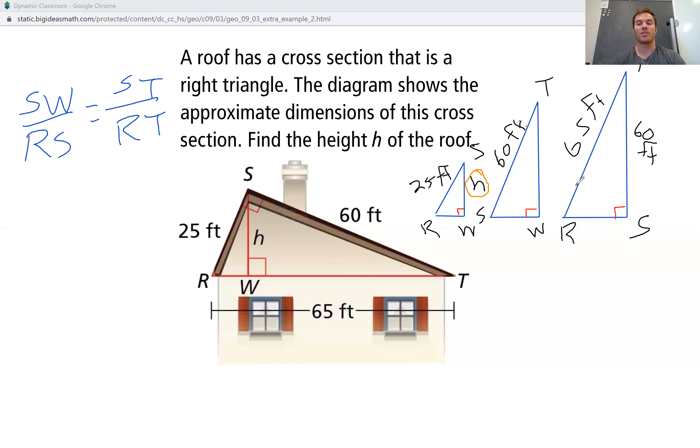Now I have to plug and check. So I'm going to substitute. We're using the substitute property. I'm going to substitute. SW is H. RS is 25. Set it equal to ST, which is 60. And RT is 65. We have our ratio.